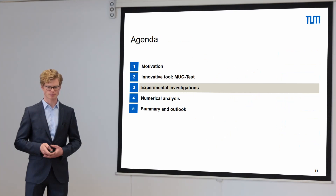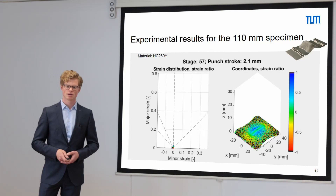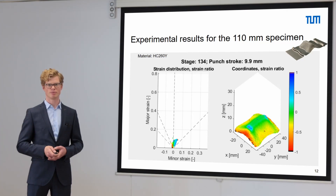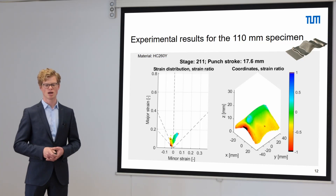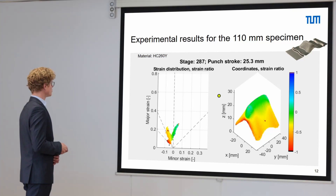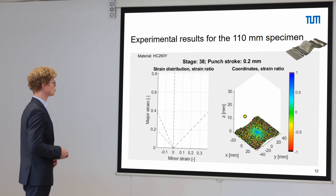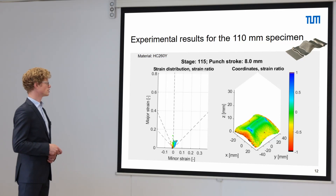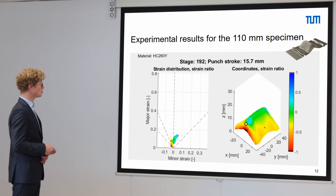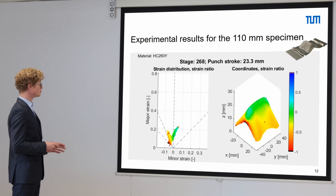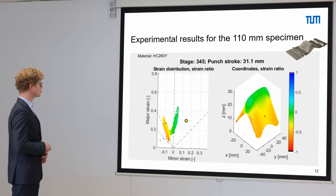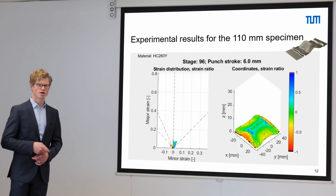Now let me show you some experimental investigations. In this video you can see the experimental DIC results for the 110 mm specimen of the interstitial-free material HC-260Y with a sheet thickness of 1 mm. On the left you can see the resulting strain distribution and on the right the corresponding coordinates in the visible area of the sheet. The data is colored according to the strain ratio and some characteristic points are marked: the edges of the punch, the middle of the punch, and the flange area. It is possible to connect these two plots and we can see the V-shape that results for this specimen, mainly formed by the corners for the right branch and the flange area for the left branch.